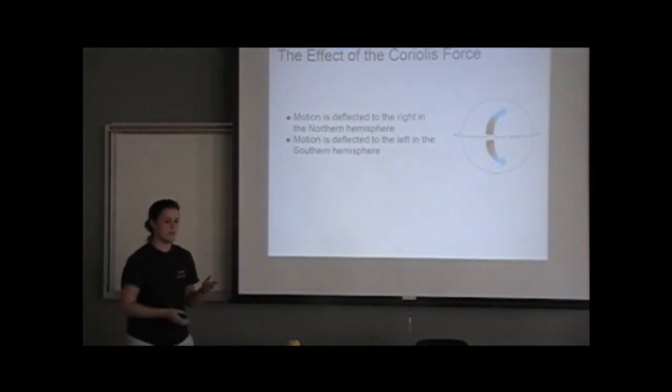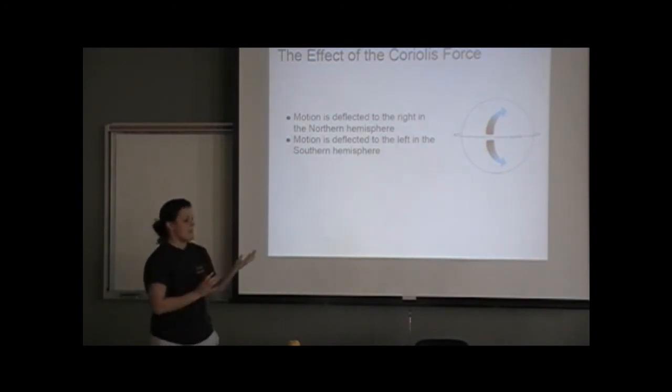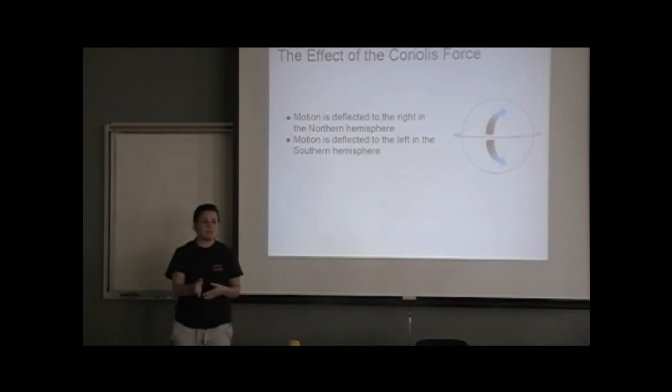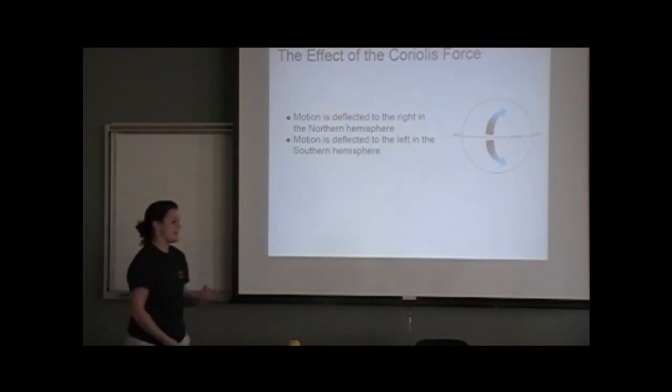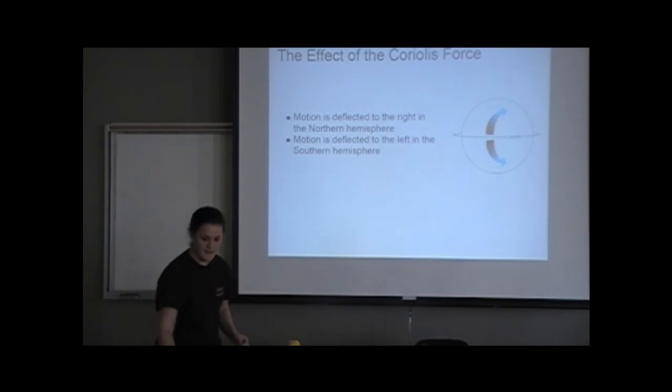So just a summary of what the effect of the Coriolis force is. If you're in the northern hemisphere, the effect is that motion is deflected towards the right. If you're in the southern hemisphere, it's the opposite, deflected towards the left. Because again, if you're looking up at the earth from the southern hemisphere, it looks like it's rotating clockwise. So the effect is opposite, it deflects to the left.